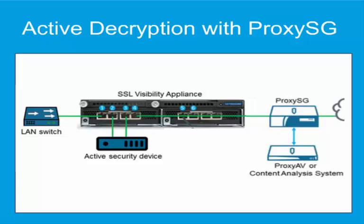First, connect the management port on the SSL Visibility Appliance to your management network. Then connect the network ports in pairs, because the failure mode will allow us to select corrective options. Port 1 and port 2 can auto-connect in a software failure, as can port 3 and port 4, and so on.